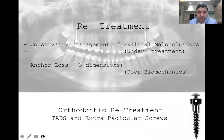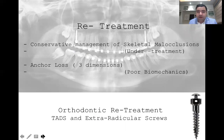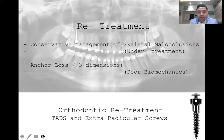As experienced clinicians, we tend to get a lot of retreatment cases where patients are not happy with their treatment results. These patients can be categorized under two headings: under-treated cases, meaning they required greater intervention than what was done by a previous orthodontist, or it could be a case of anchorage loss in which poor biomechanics was being followed. We will look into the first part, which is the conservative management of skeletal malocclusion — basically under-treated cases.